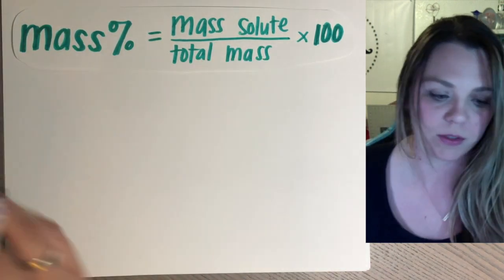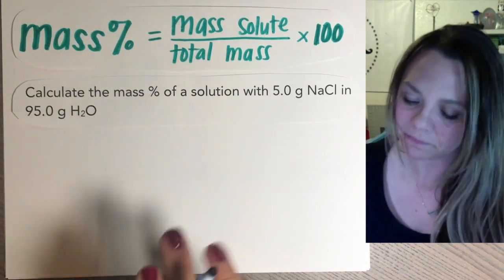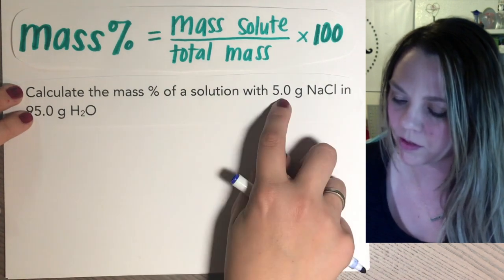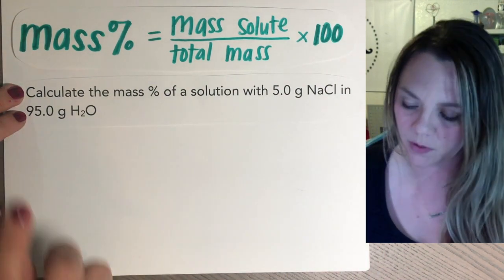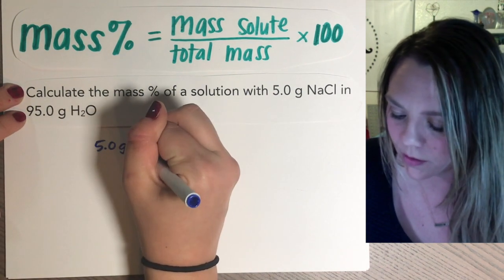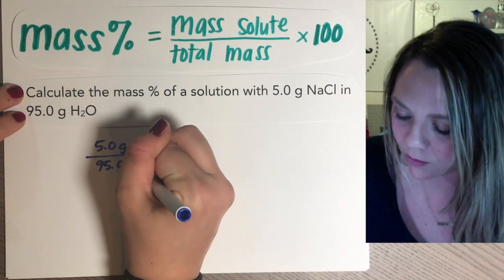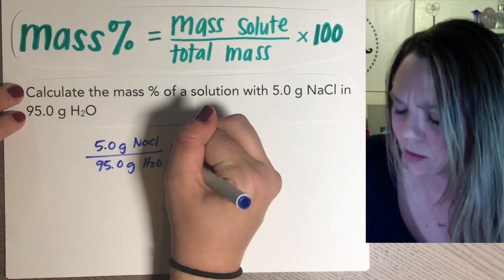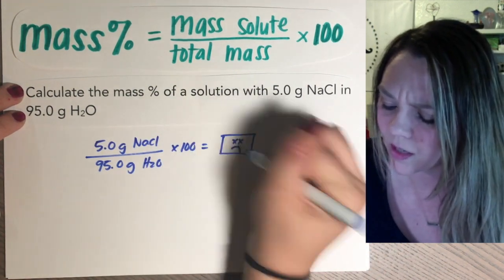And I'll just do an example. Here's like the easiest possible type of example. Calculate the mass percent of a solution with five grams of sodium chloride in 95 grams of water. Okay, number one mistake that will happen is someone will be like, oh good, 5.0 grams of sodium chloride in 95 grams of water. And then they'll be like, yeah, I'm multiplying by 100 and I get an answer. And you're wrong.